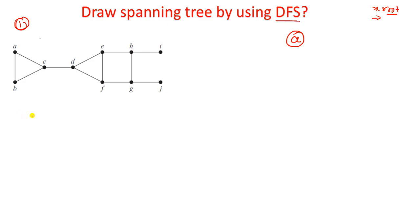For a better understanding, I'll write here: for A, how many incident vertices does A have? A has edges with C and B. Can we take all of C and B? No, we just have to explore only one vertex. So I take C as the next vertex.